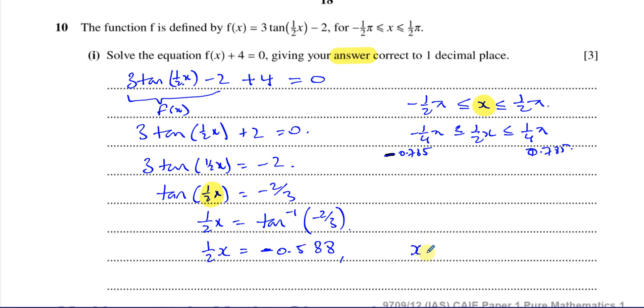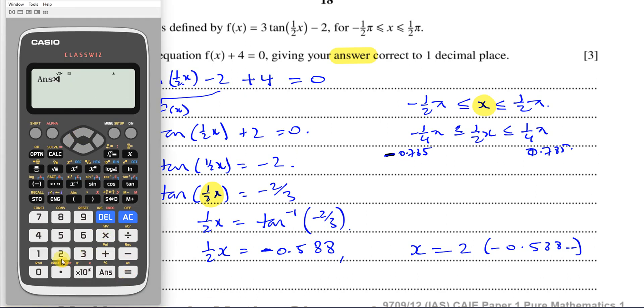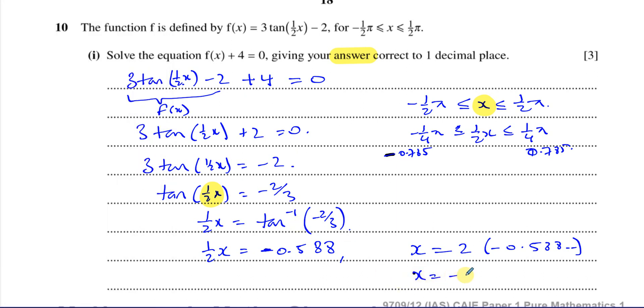But this is for x/2. I want to find what x is. So I'm going to say x equals 2 times -0.588. I take my answer that I got before and multiply it by 2, and I get -1.176, which then rounds to one decimal place as -1.2. So there's my final answer. This is in radians: -1.2 radians. So there's the answer for part one.